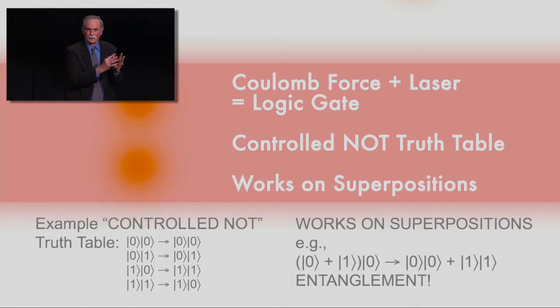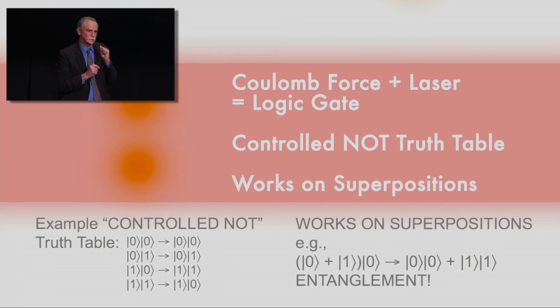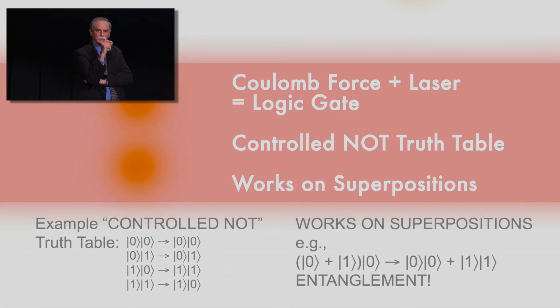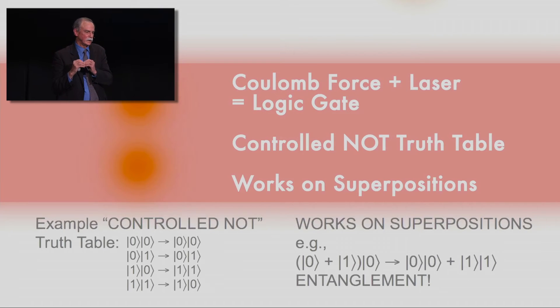We can make logic gates in our classical computers that do this too, but the key part is that this works on superposition. If the first bit is in a superposition state and you follow the truth table, you get a situation where it's a superposition of both bits being in the zero state and the one state at the same time. This is very elementary, but the idea is that with these very simple primitives — a logic gate like this — we can in principle do any arbitrary computation that we might want to do.